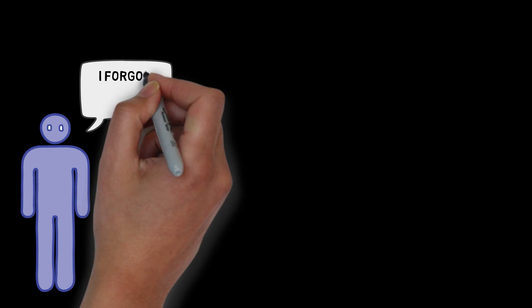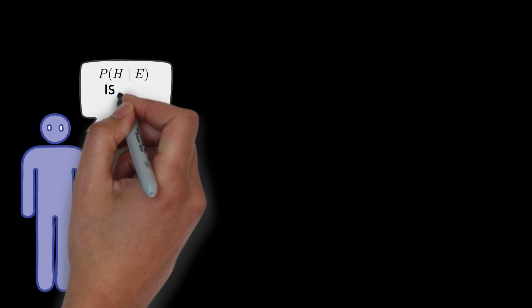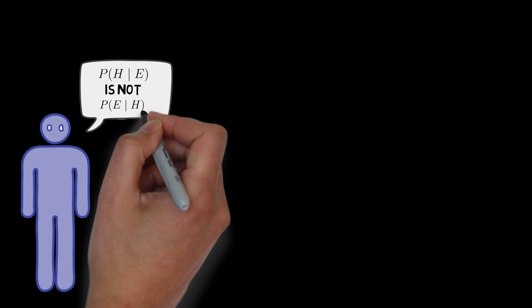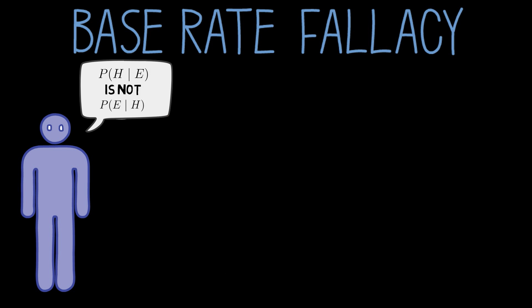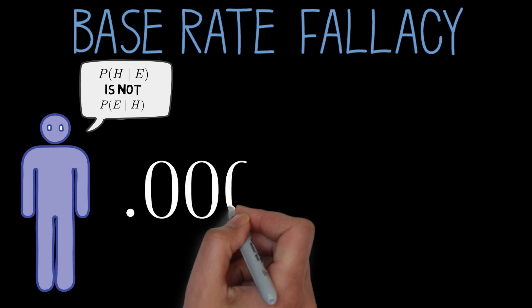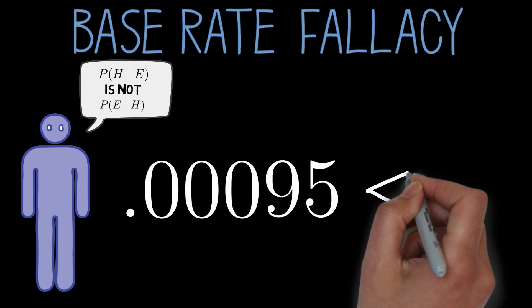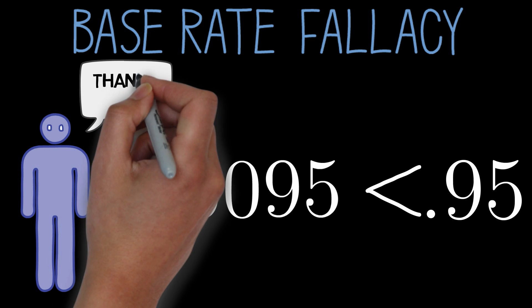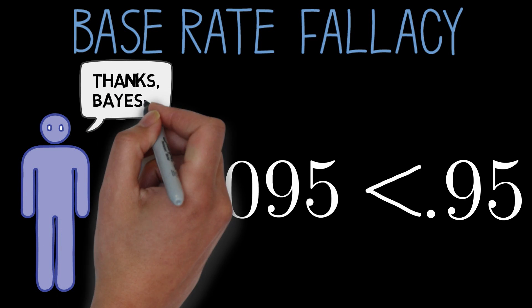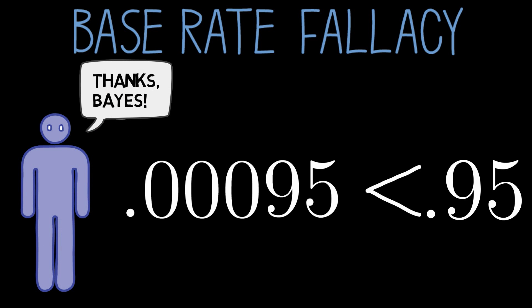Bayes' theorem is very helpful because in figuring out what to make of some new piece of evidence, people often ignore the prior probability of the hypothesis or treat P of H given E as P of E given H. This mistake is sometimes known as the base rate fallacy. In the case we just looked at, P of H given E is very different from P of E given H. One is less than 1 tenth of a percent, and the other is 95%. Without Bayes' theorem, you might have gotten a lot more worked up about hypothesitis than you needed to be.